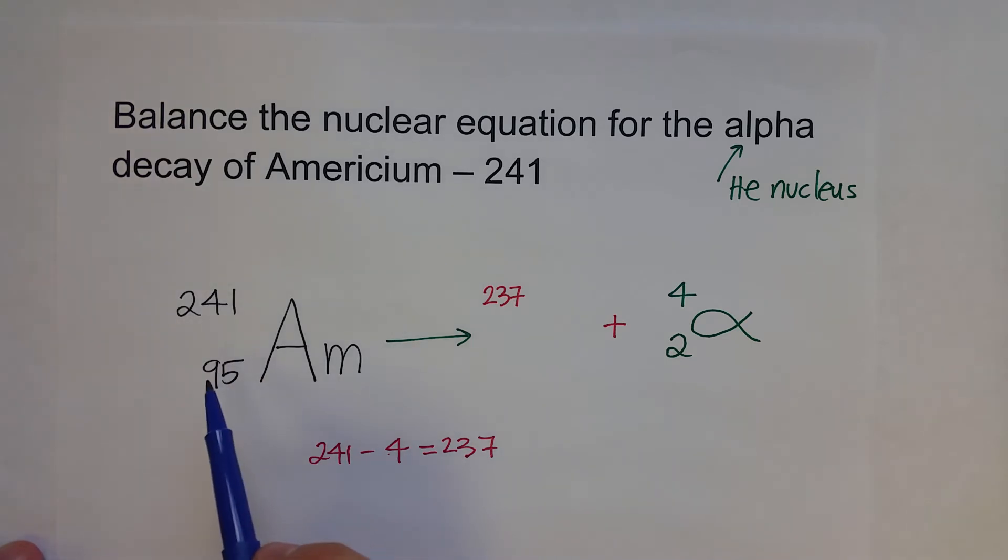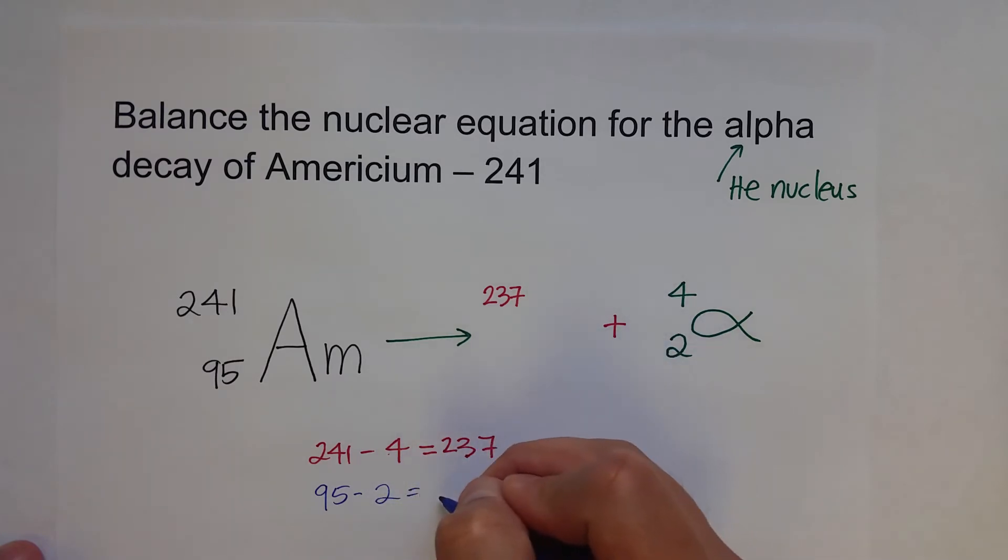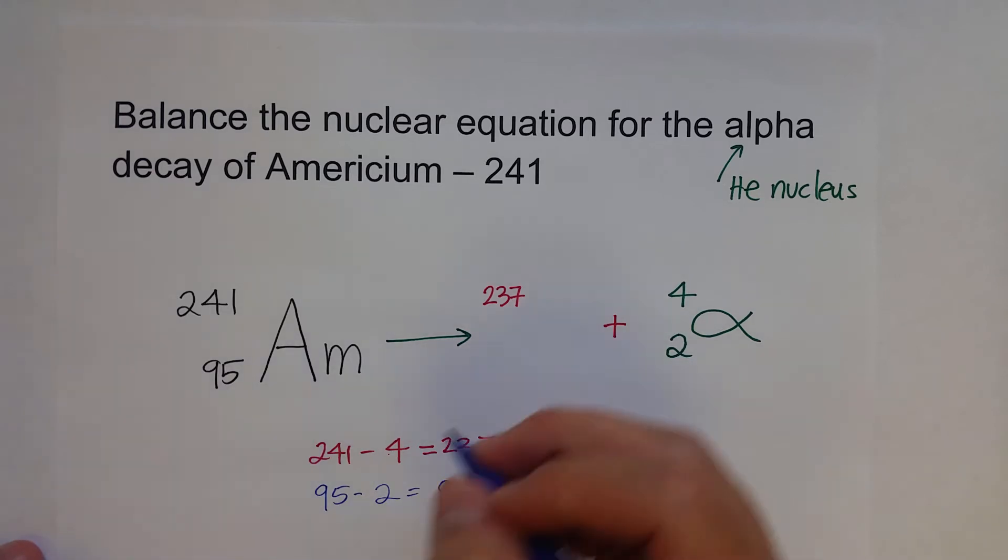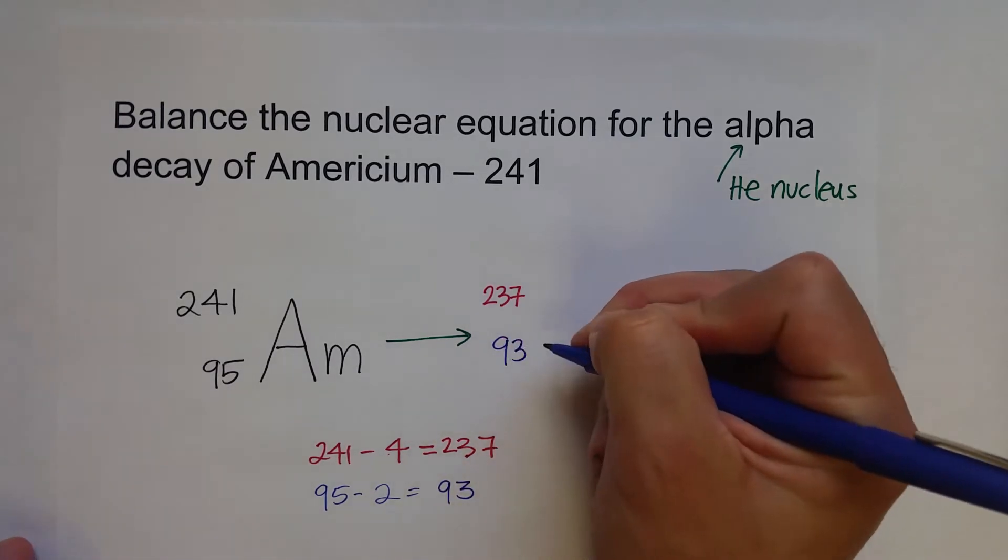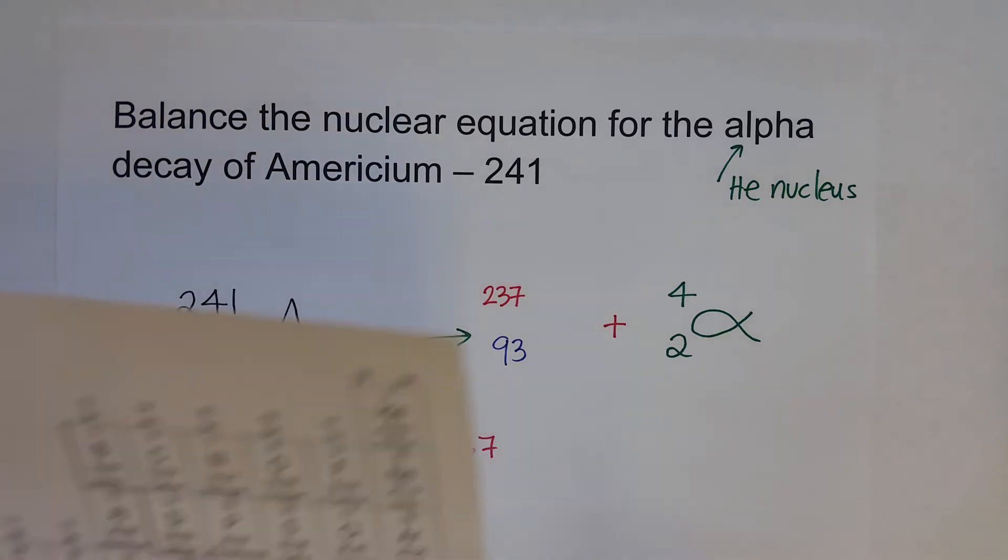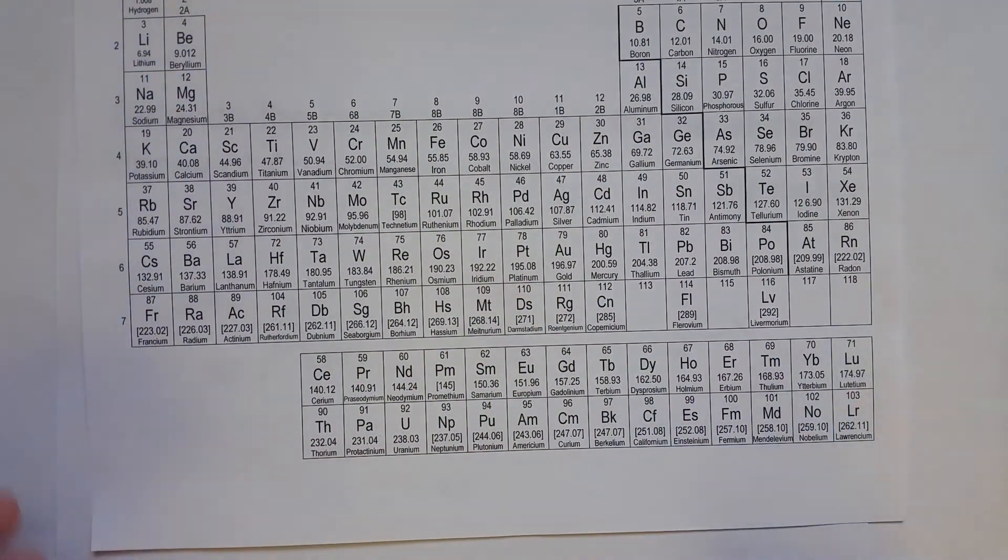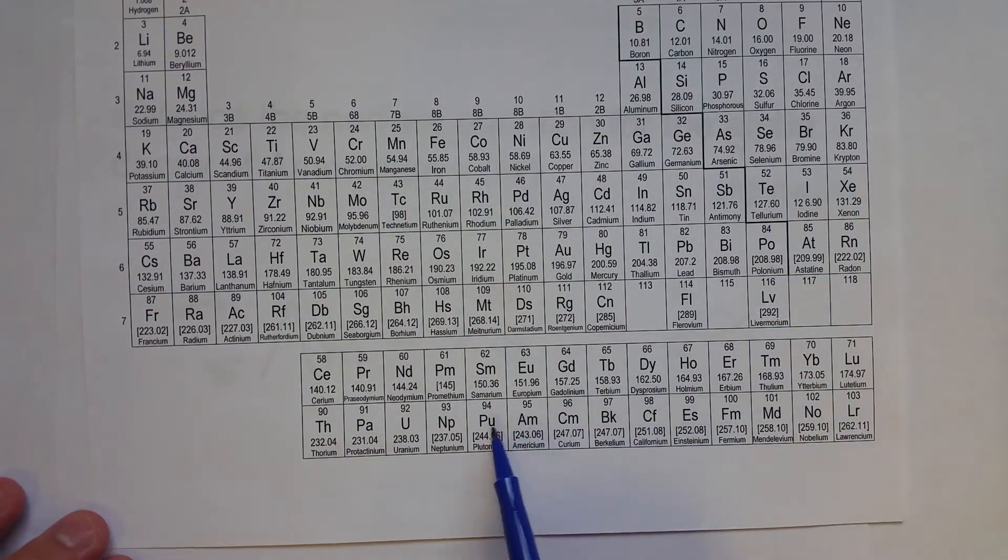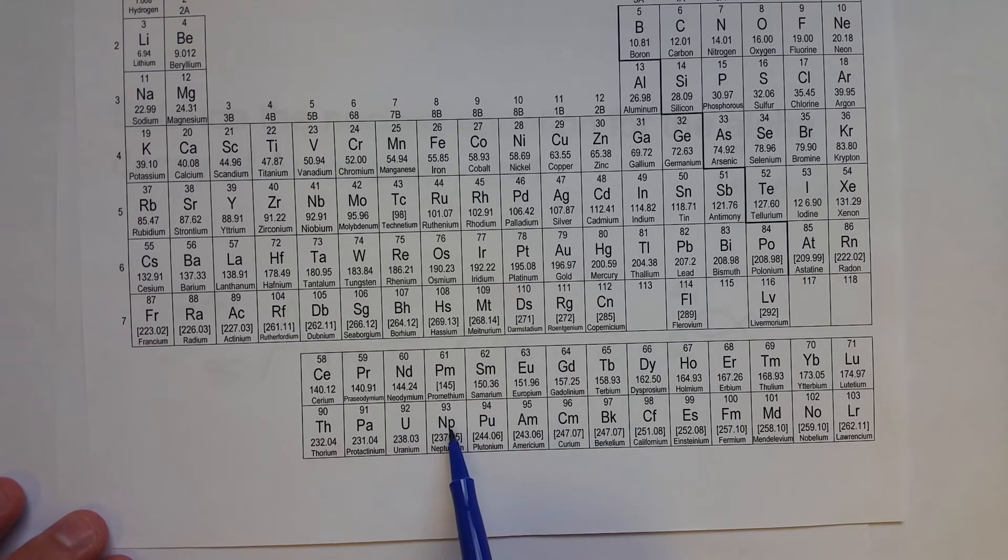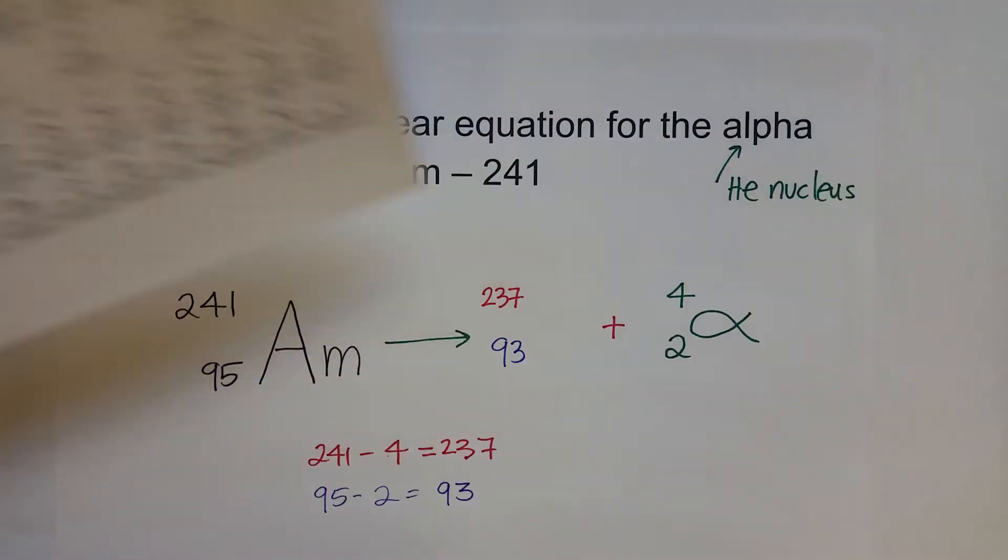What's the atomic number? 95 and 2. So, 95 minus 2 will give us our missing atomic number. 95 minus 2 is 93. And so, our new isotope that's being produced in this nuclear reaction has an atomic number of 93, which means it has 93 protons. And, if we go back to the periodic table, we can find out that that new isotope is neptunium, Np.